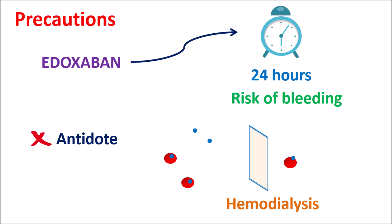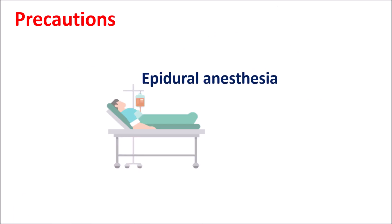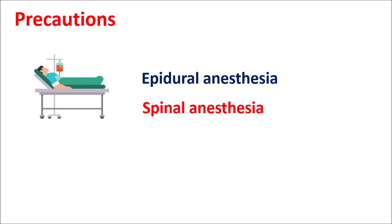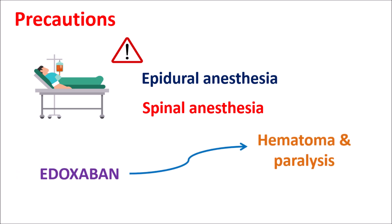Before using this drug, the risk of bleeding should be thoroughly assessed. In conditions like pathological bleeding or before surgery, this drug should be avoided. Similarly, during epidural and spinal anesthesia, care should be taken because Edoxaban can increase the risk of hematoma, which can lead to paralysis.